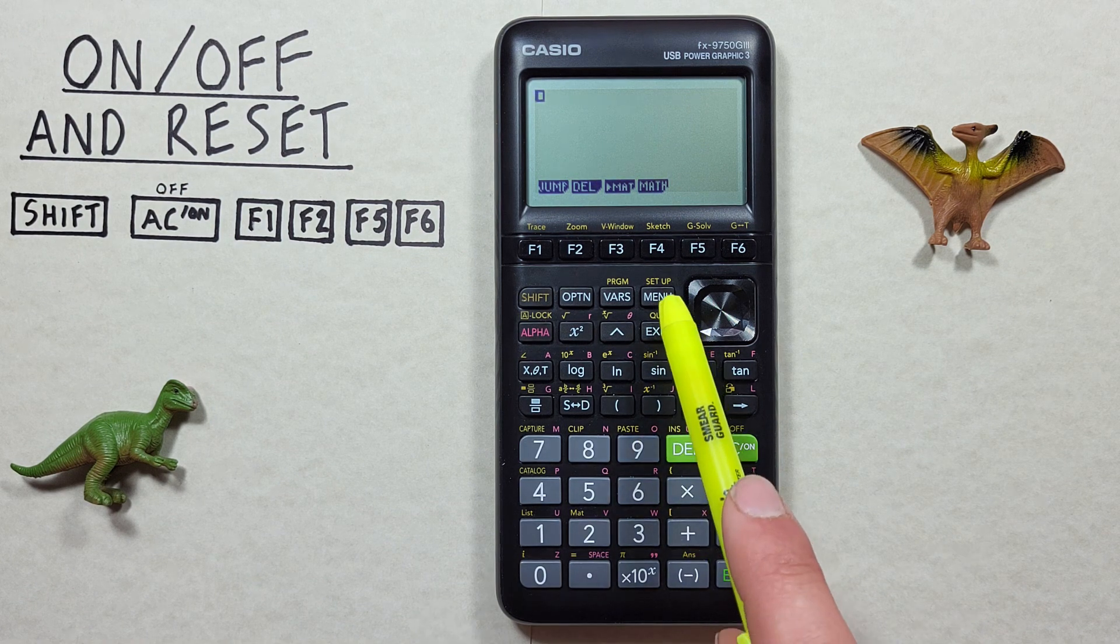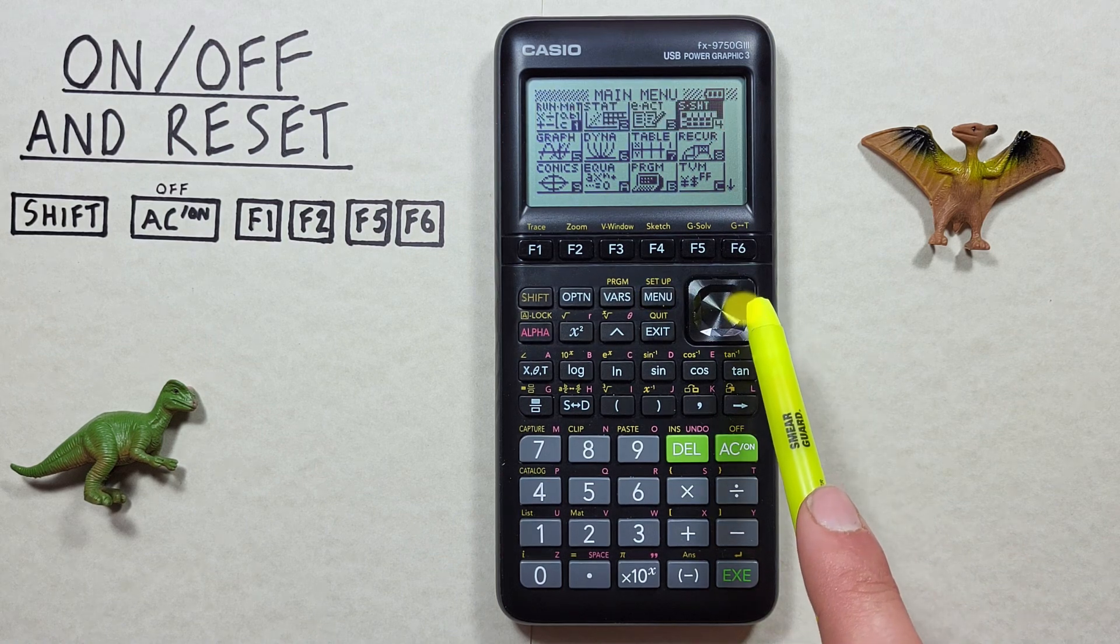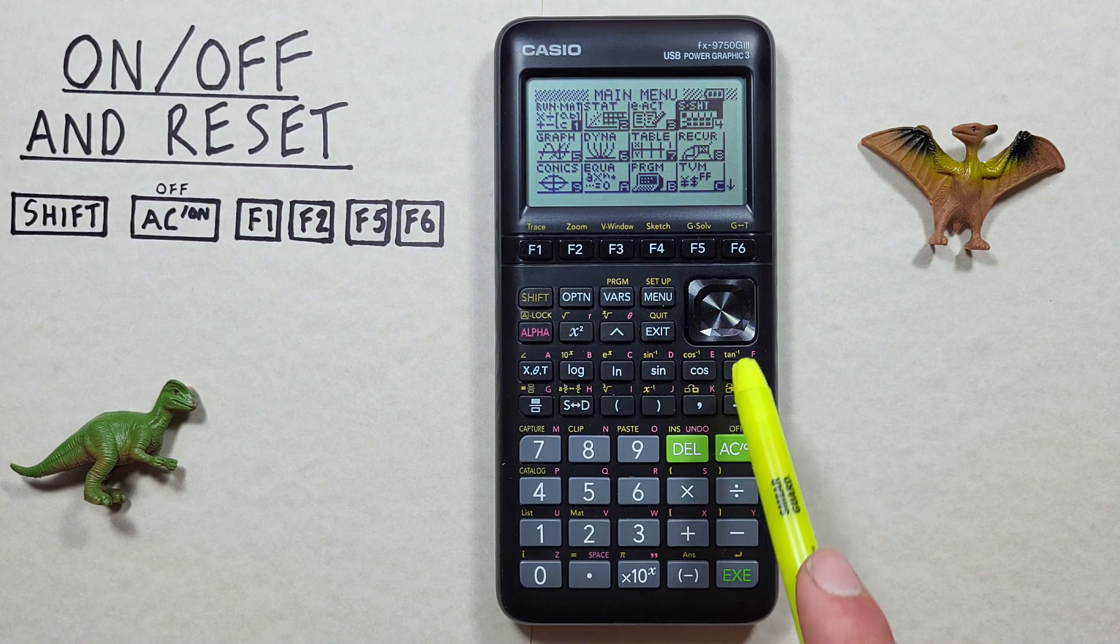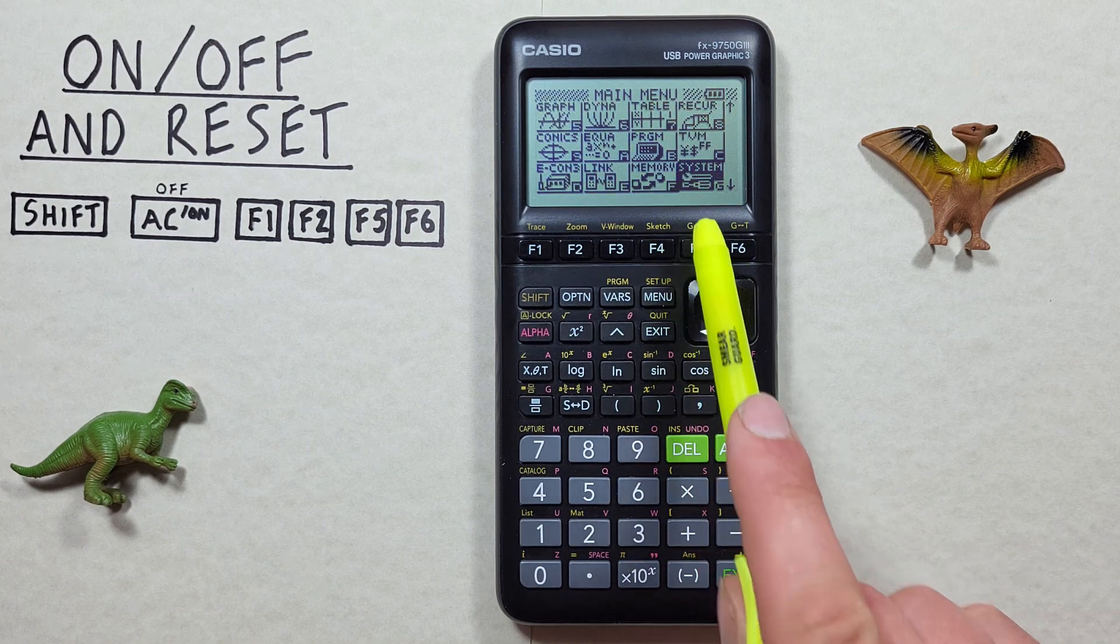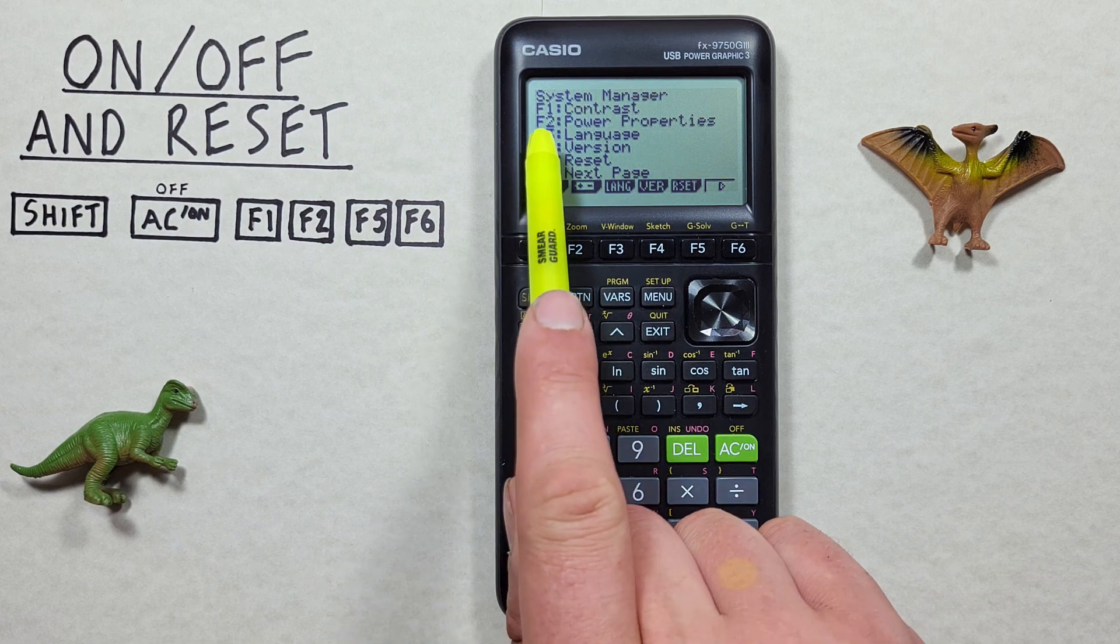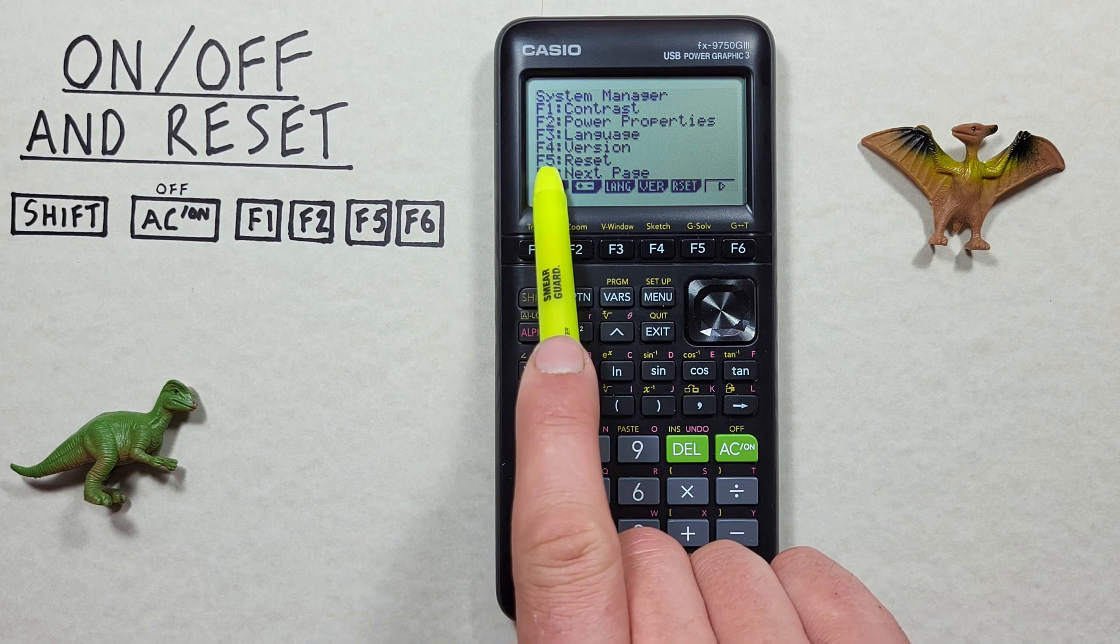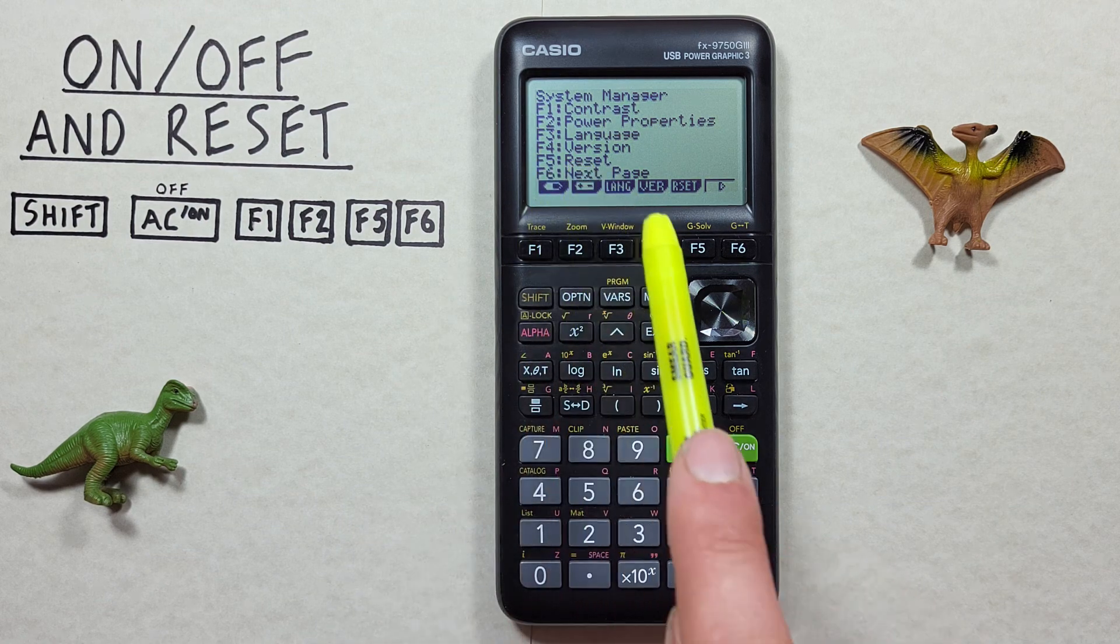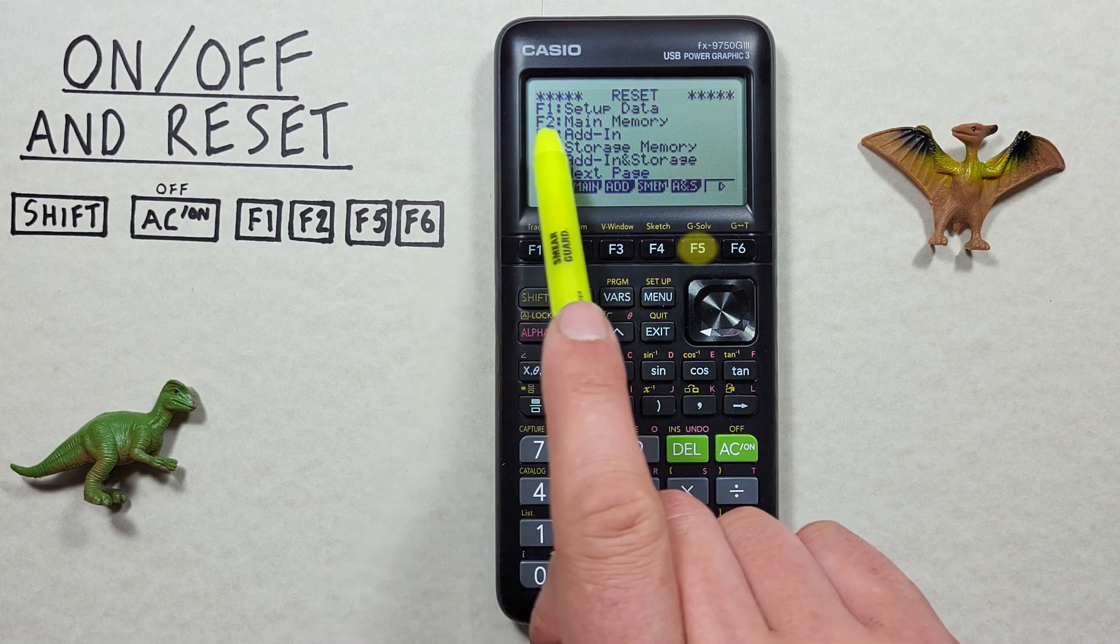To do this we press the menu key and then scroll all the way to the right and down until we see system, and we select that with the EXE key and that gives us the system manager menu. We see down here in F5 the reset menu. So we press F5 and that brings us to the reset menu.